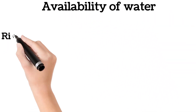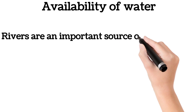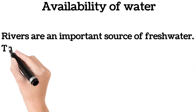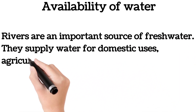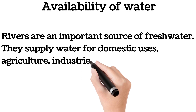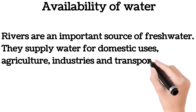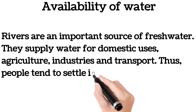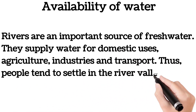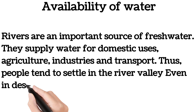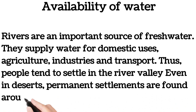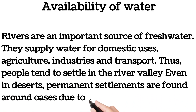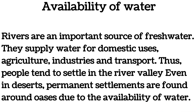Availability of water: rivers are an important source of fresh water. They supply water for domestic uses, agriculture, industries, and transport. Thus people tend to settle in the river valley. Even in deserts, permanent settlements are found around oases due to the availability of water.